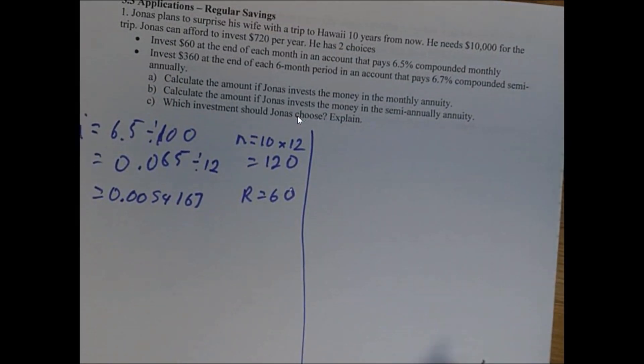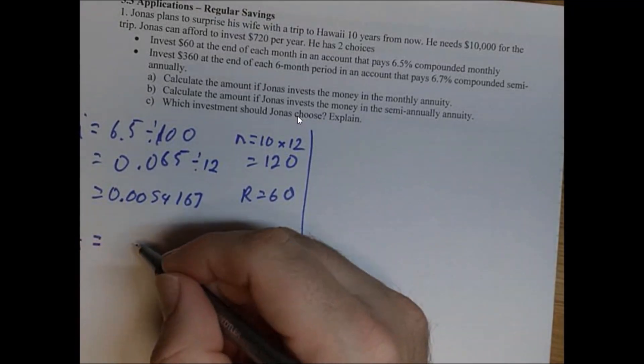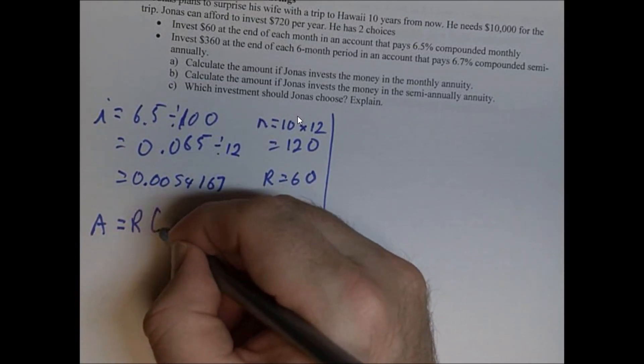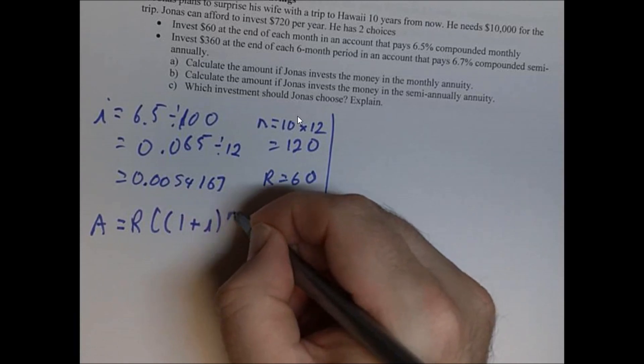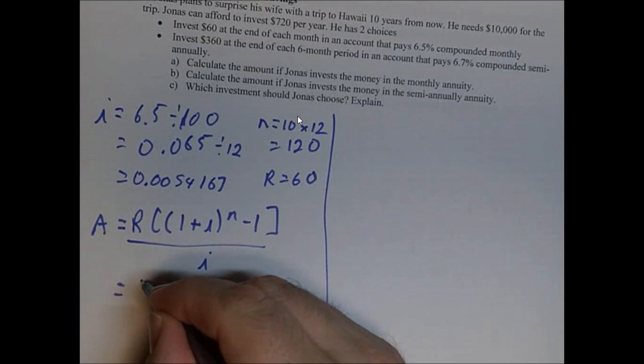Now we're going to put all that into our fancy formula to find A. So A equals, if you can't see here, A equals R, bracket, bracket, 1 plus I to the N minus 1, all over I. Let's put our R is 60, bracket.